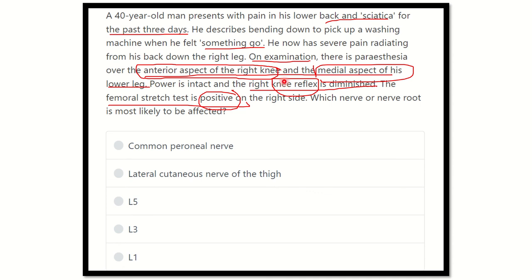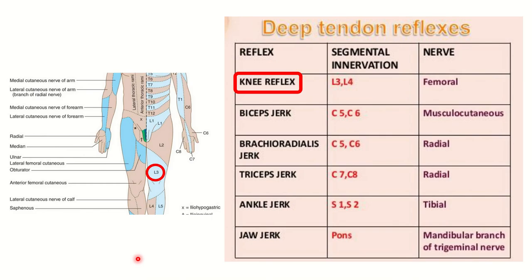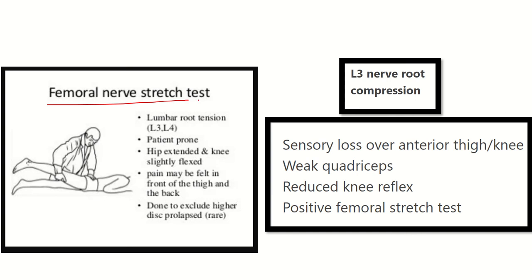The answer options are: common peroneal nerve, lateral femoral cutaneous nerve (lateral cutaneous nerve of the thigh), L5 nerve, L3 nerve, and L1 nerve. Looking at the sensory area — the anterior aspect of the thigh and medial aspect of the upper leg — this corresponds to the L3 nerve, which supplies up to the anterior aspect of the knee and the medial aspect of the leg. For the knee reflex, the nerve roots are L3 and L4. The femoral stress test also implicates L3 and L4. So L3 is common to all three findings.